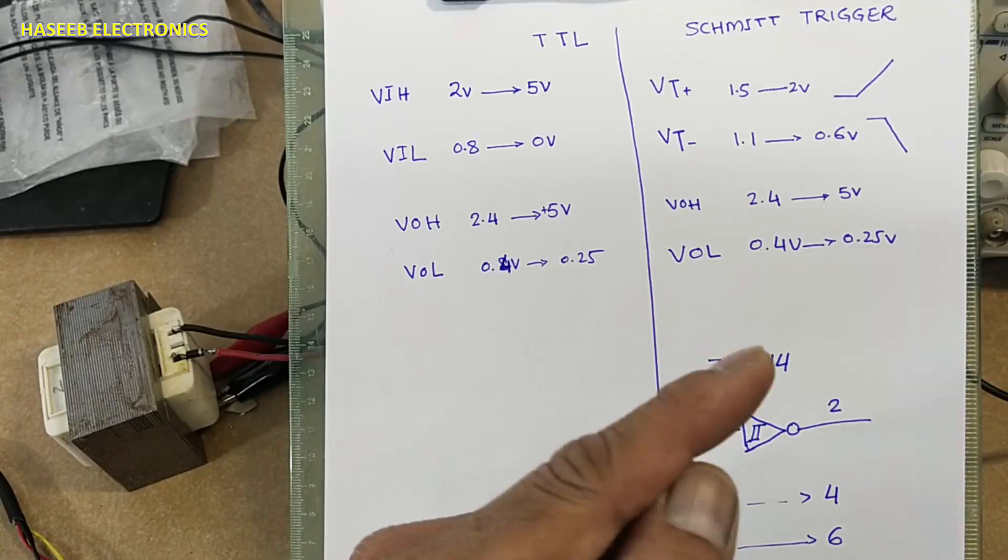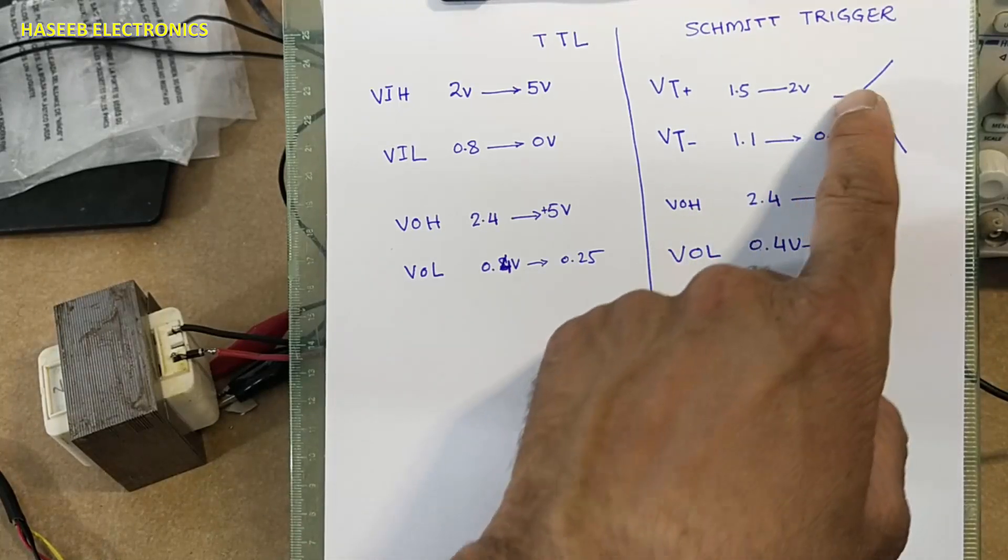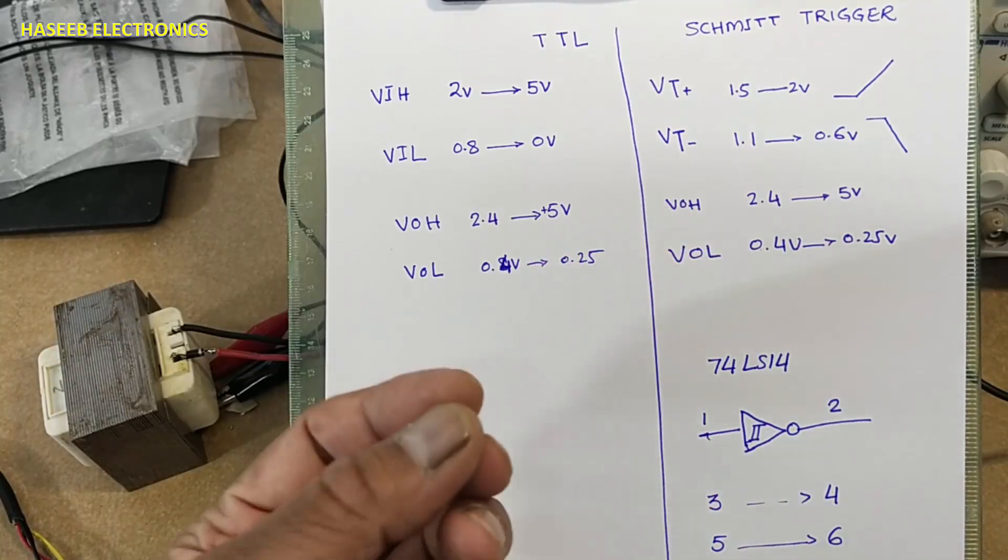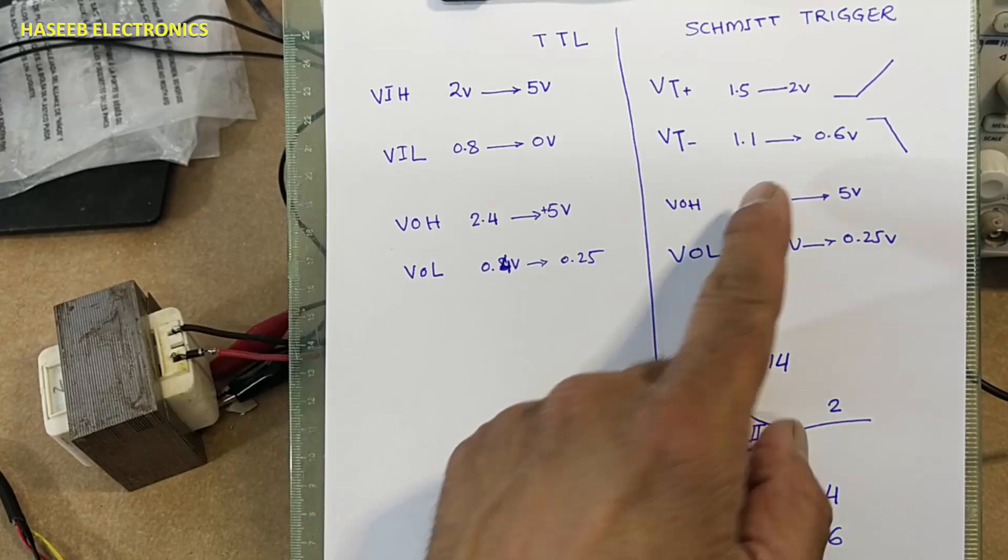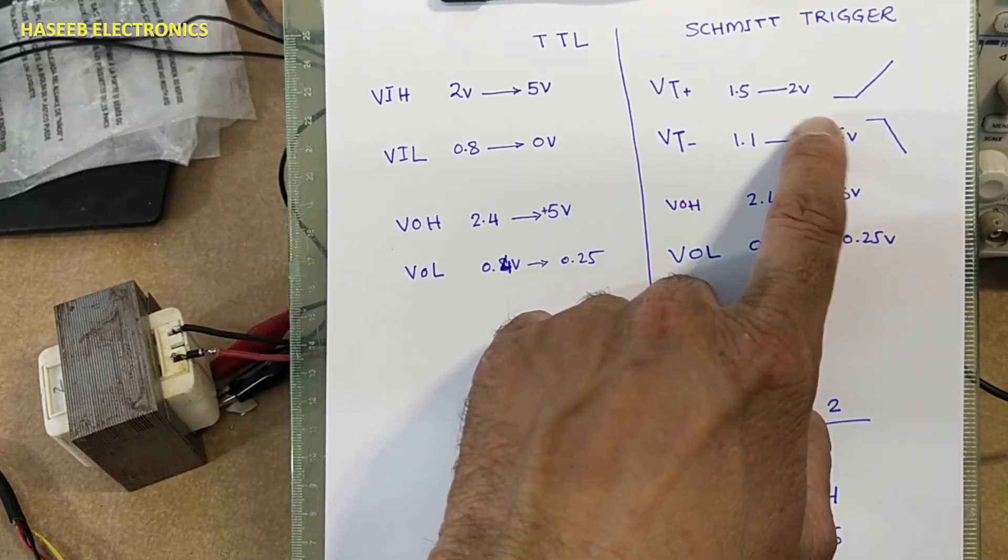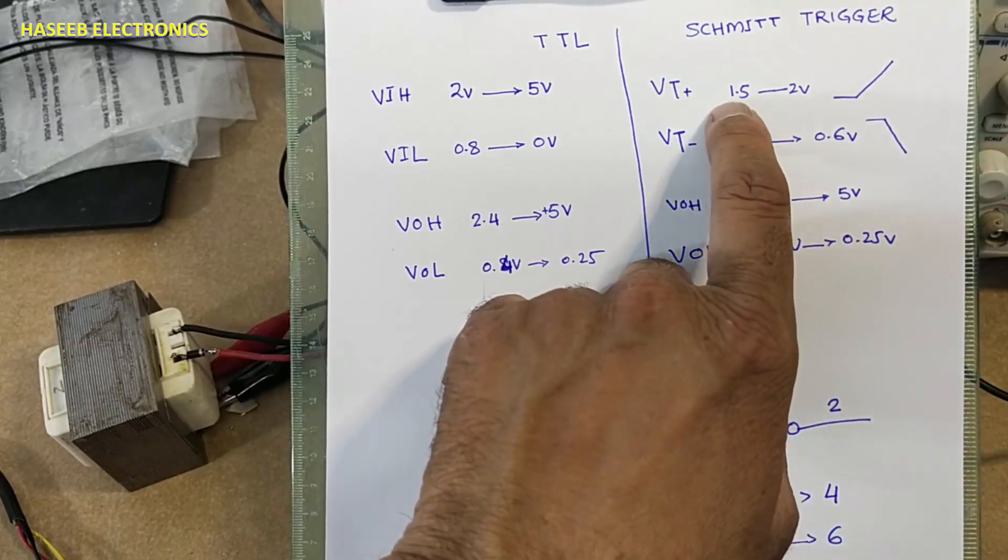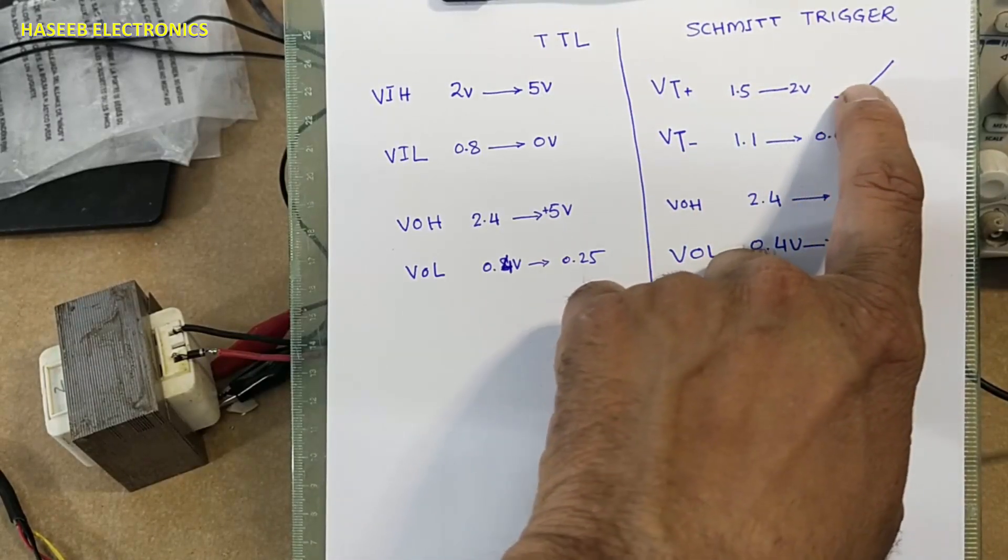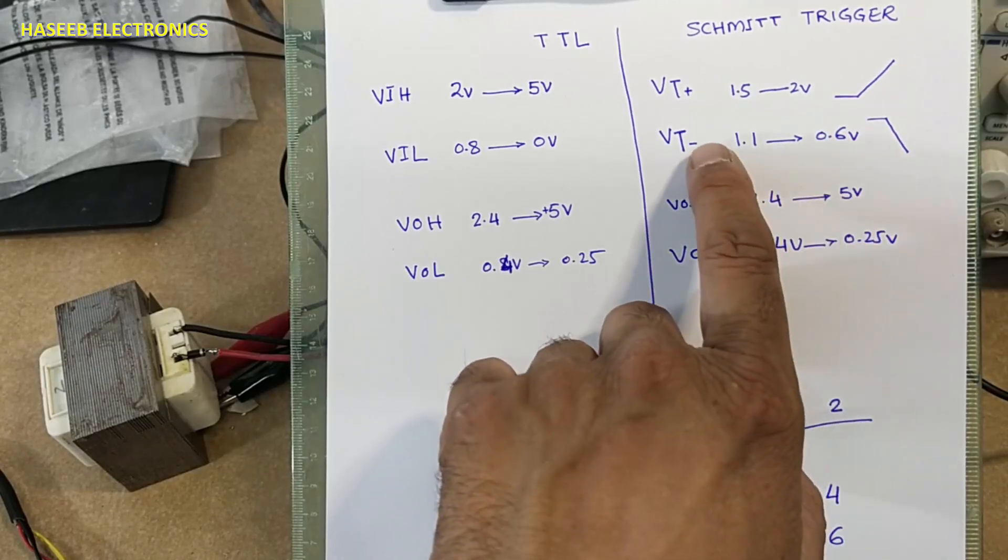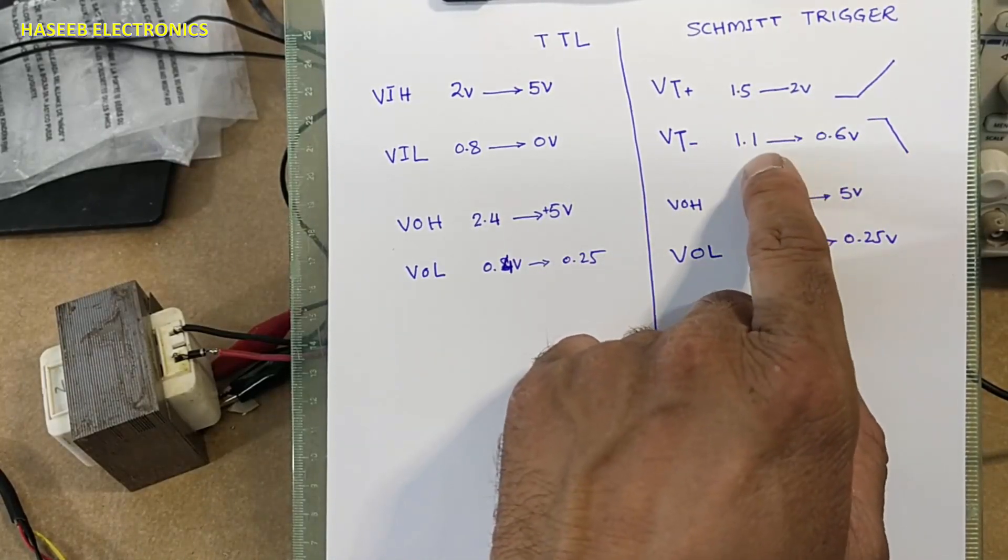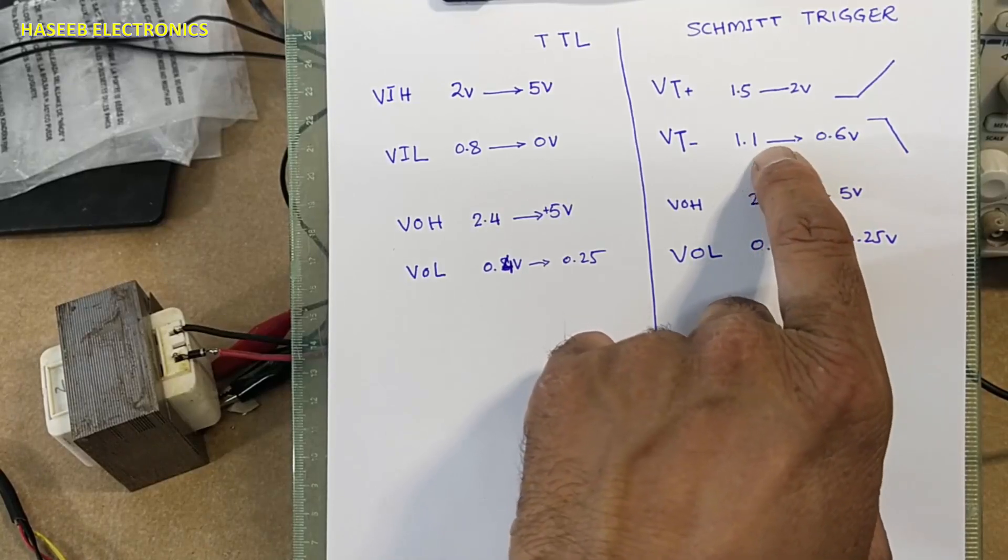So it will detect the voltage when a rising voltage will reach at 1.5 volts to 2 volts, it will trigger and it will remain on until the voltage will drop again below 1.1 volts.